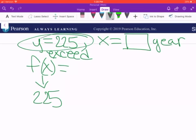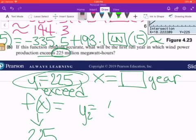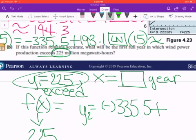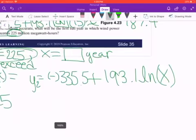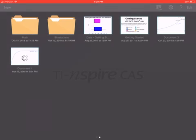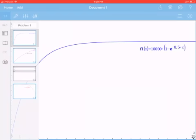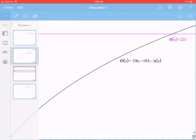I'll graph y = 225 as one equation, and the original function as the other. When entering on your calculator, make sure to include the negative sign: -335.5 + 193.1 ln(x). Use x as the variable, not a number, or you'll get a horizontal line. Here are my graphs showing the line y = 225 and the function.